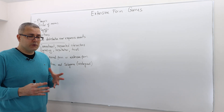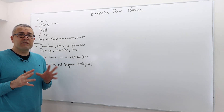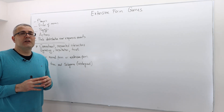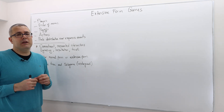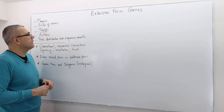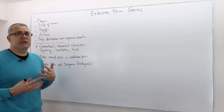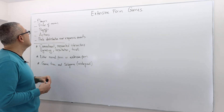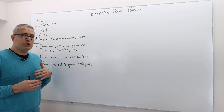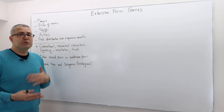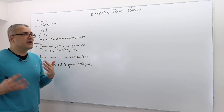Similar to the normal form games or strategic form games, there are several things that you should be clear about when you describe an extensive form game. First, the set of players — who are the players and how many of them we have. Second, the order of moves: which player moves first, which player moves second, third, etc.